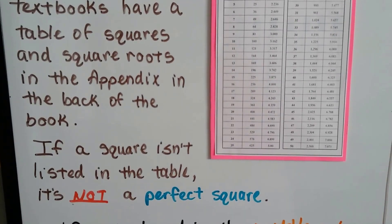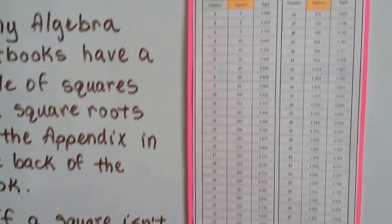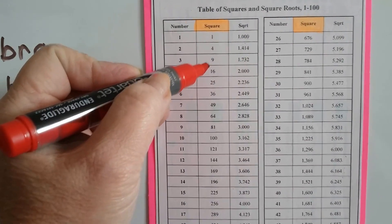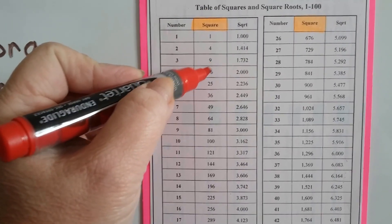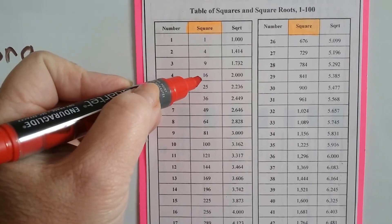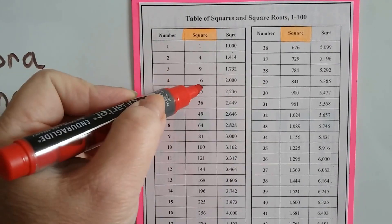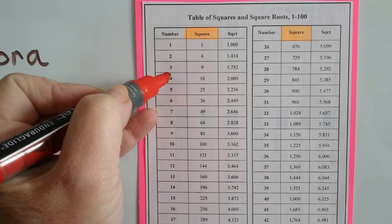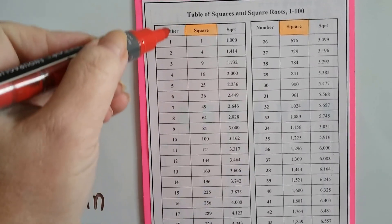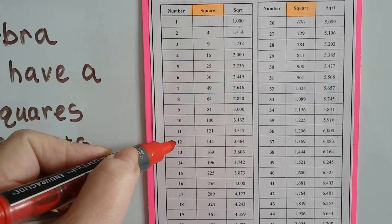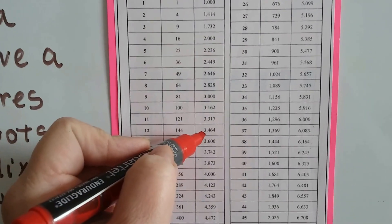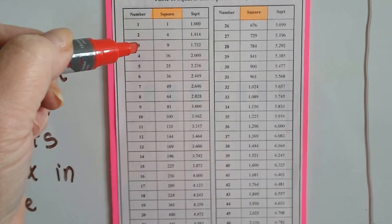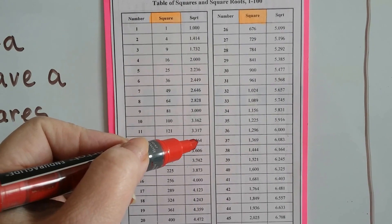If a square isn't listed in the table, then it's not a perfect square. Let's look at this center column. What would be the square root of 12? Well, it's not listed here — it's in between the 9 and the 16. The square root of 9 is 3 and the square root of 16 is 4, so the square root of 12 is somewhere between 3 and 4. We could also go down the first column to 12 and see that the square root is approximately 3.464 — just like we thought.